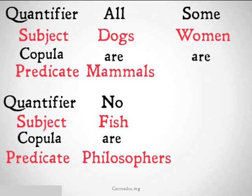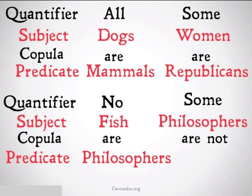You could have some women are republicans, or even some philosophers are not crazy. All of these are examples of categorical propositions because they all have a quantifier, a subject, a copula, and a predicate. In fact, they're four of the most important types of categorical propositions that you'll see.